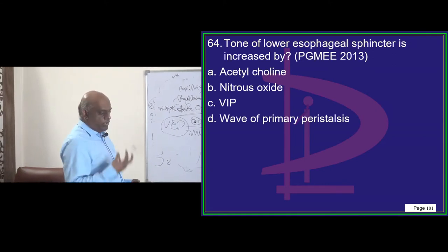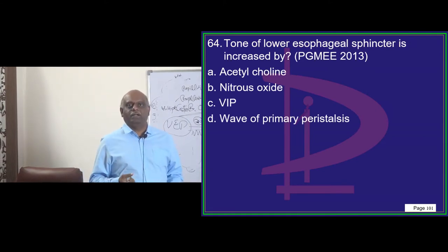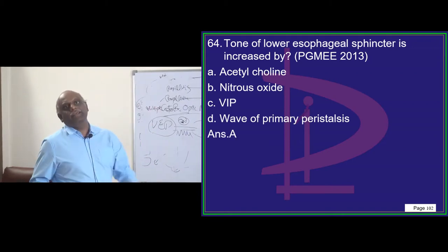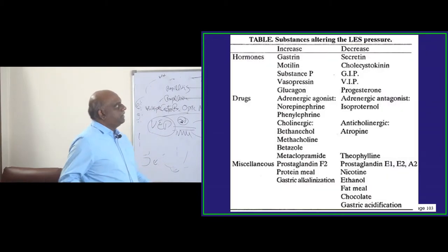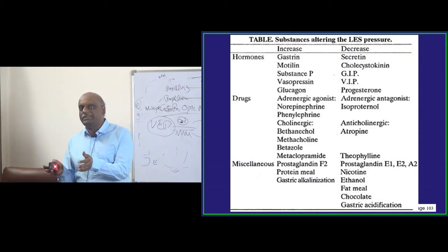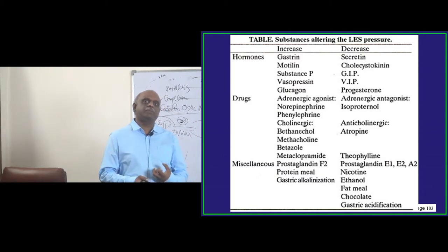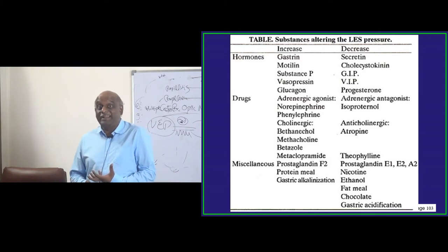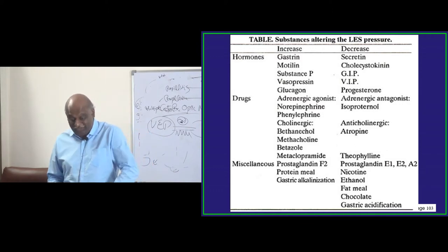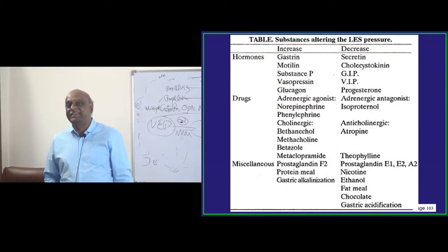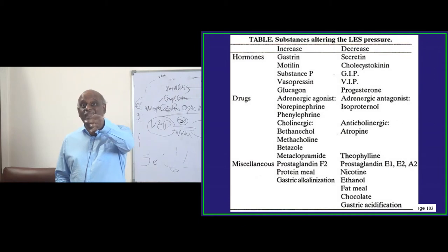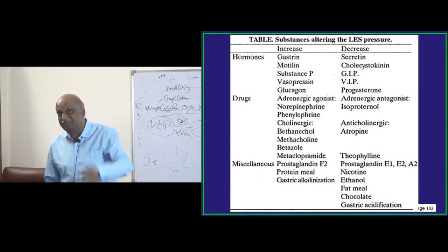The tone of the lower esophageal sphincter is increased by acetylcholine. There are certain substances that increase the lower esophageal sphincteric pressure and those which decrease it and make it get loose, causing reflux. The examiner's favorite question is: what increases the reflux and what makes the esophageal sphincter become tighter?